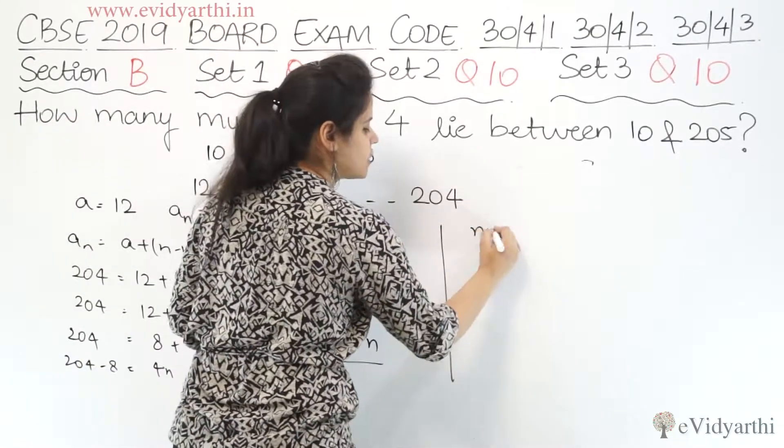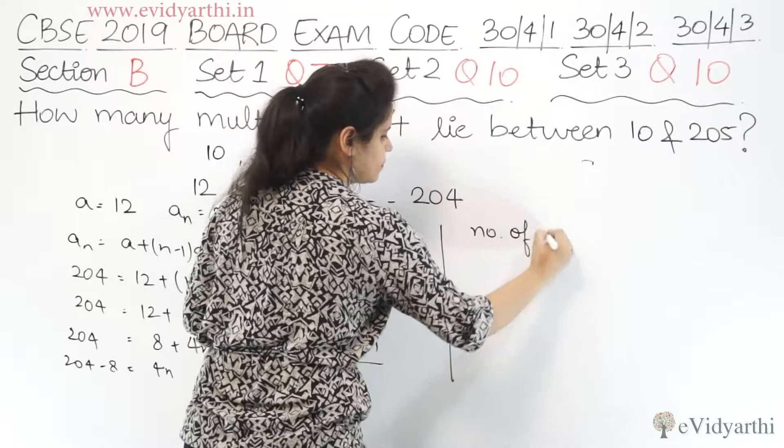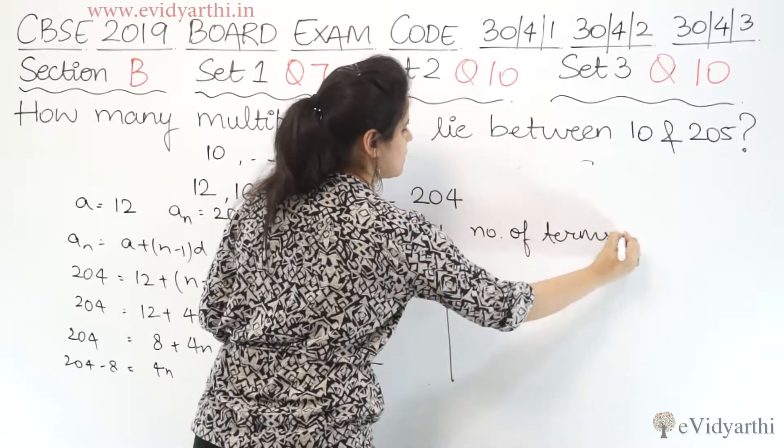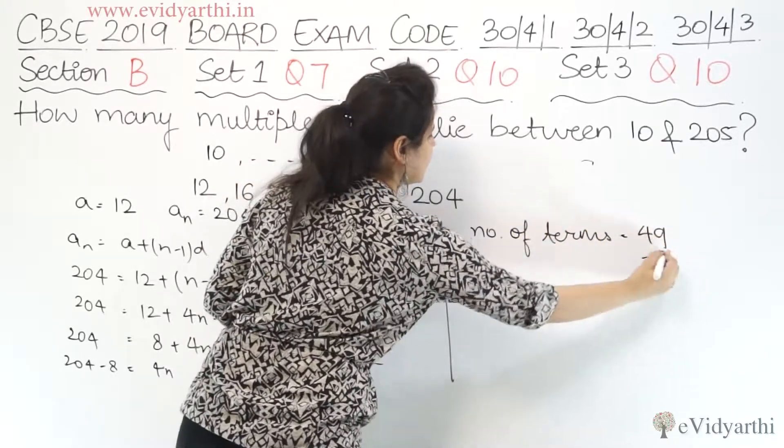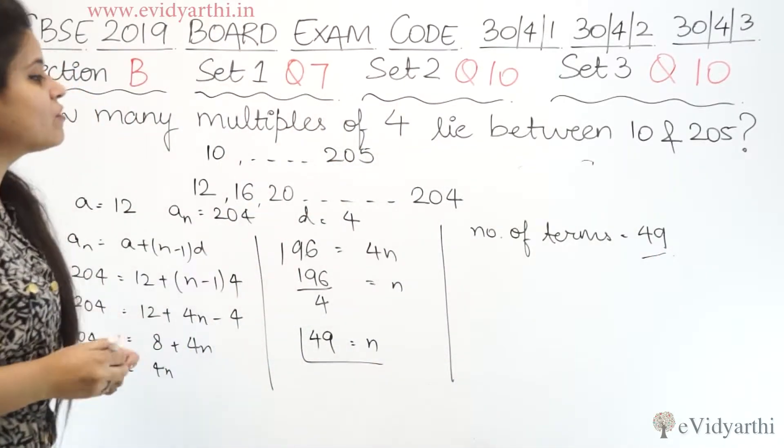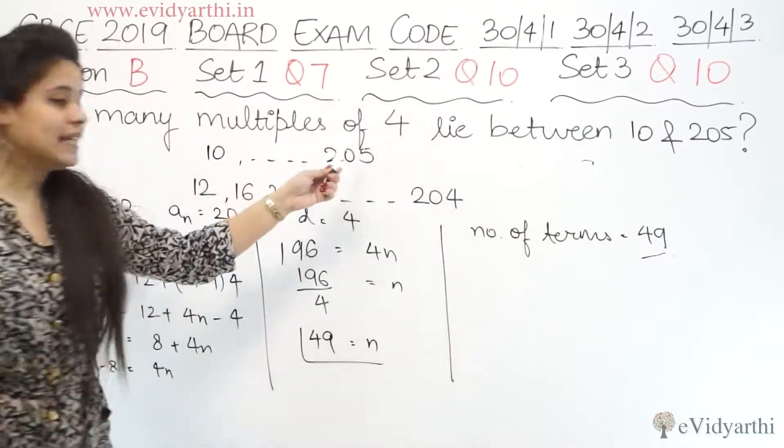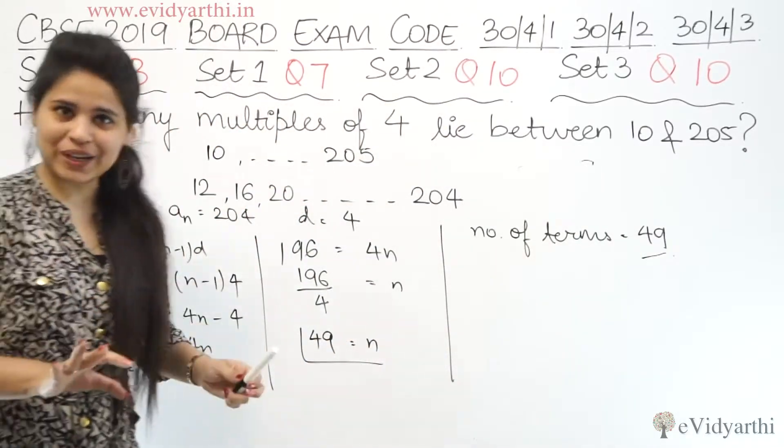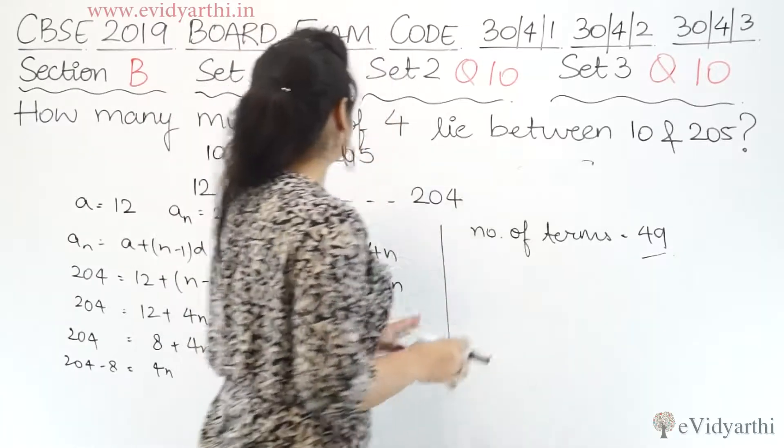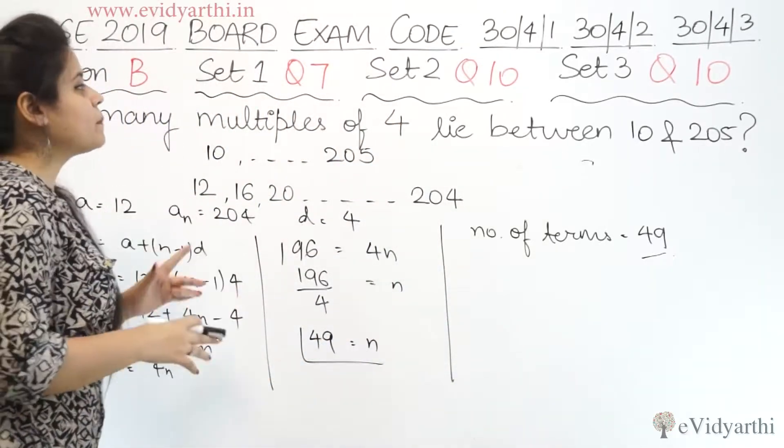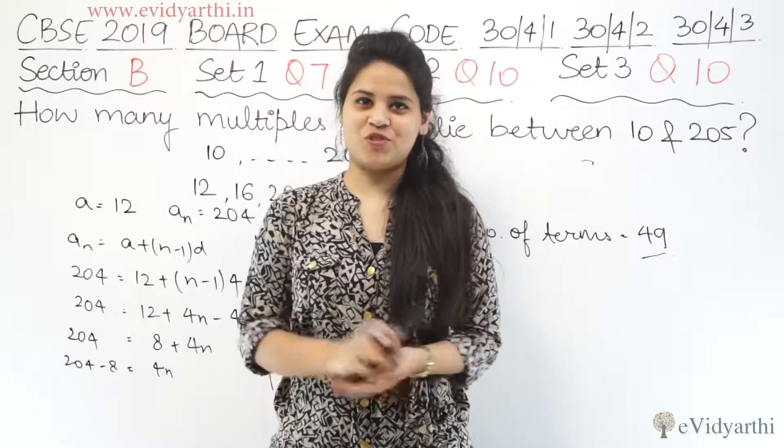n is the number of terms. So therefore the number of terms between 10 and 205 is 49. There are 49 numbers which are multiples of 4. I hope the question is clear. So this was question number 7 and we also have another question. Let's come to that question.